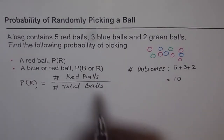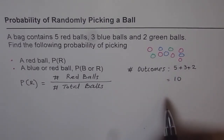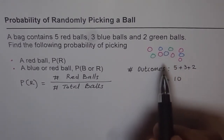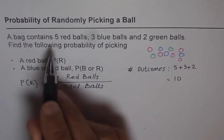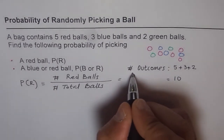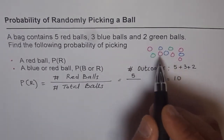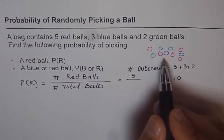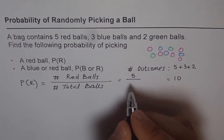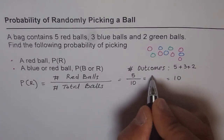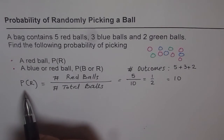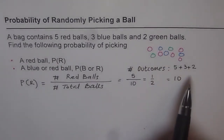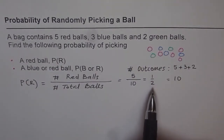The total number of balls — that is the total outcomes — is 10. And as you can see, the number of red balls is 1, 2, 3, 4, 5, already given in the question as 5. So we can say 5 is the favorable number for red, out of a total of 10. That gives us an answer of 1 over 2, or 50%. So the probability of picking a red ball from this set is 50% or one half.